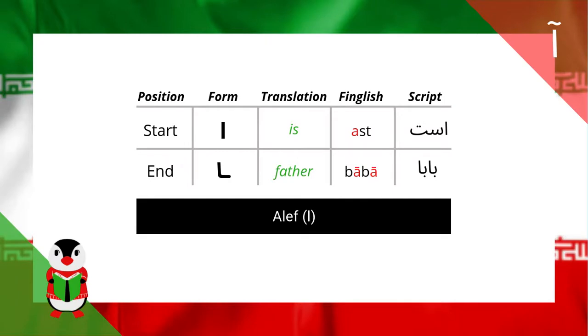When the Aleph is at the end of the word, for example, Ba-ba, meaning 'father', the Aleph can be attached to the previous letter but still remains a vertical line.